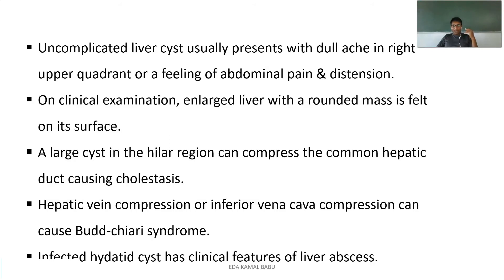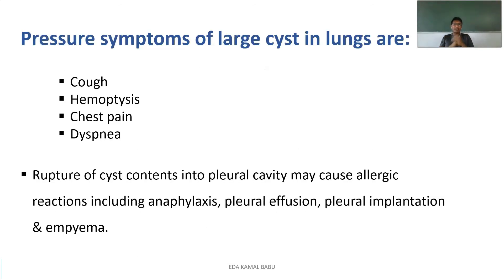Hepatic vein compression or inferior vena cava compression can cause Budd-Chiari syndrome. An infected hydatid cyst has the clinical features of a liver abscess. For cysts present in the lungs, you can observe cough, hemoptysis (bleeding from the mouth), chest pain, and dyspnea. Rupture of the cyst contents into the pleural cavity may cause allergic reactions including anaphylaxis, pleural effusion, pleural implantation, and sometimes emphysema.